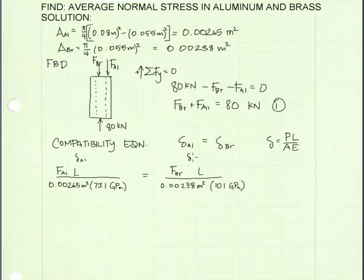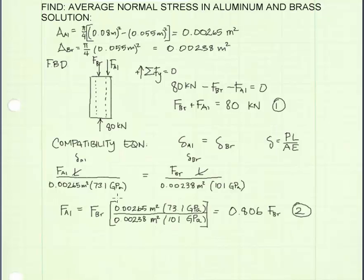This term here is the term for the deflection in the brass. For P, we put in the force in the brass. A is the cross-sectional area of the brass, and E is the modulus of elasticity for brass, which was given. Because L is the same on both sides of the equation, they cancel out. Solving this equation for the force in the aluminum, I get that the force in the aluminum is equal to 0.806 times the force in the brass, equation 2.